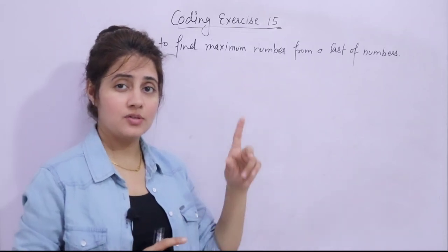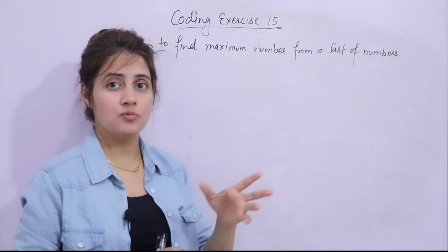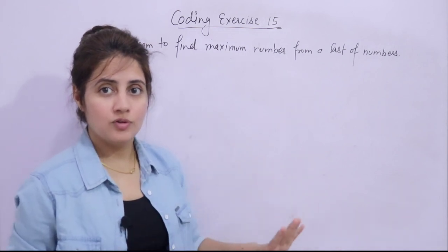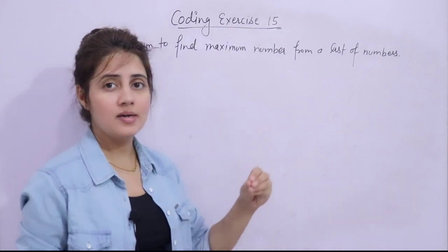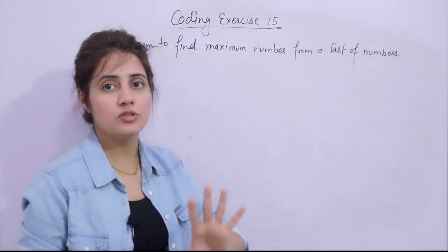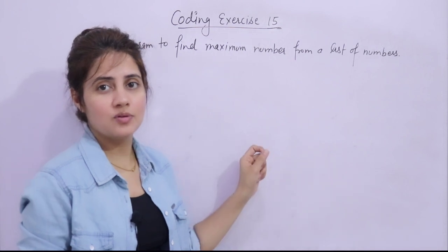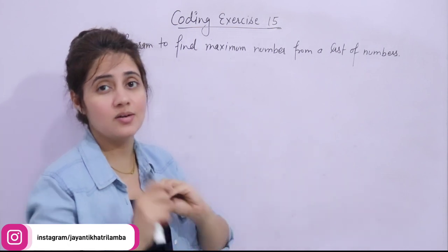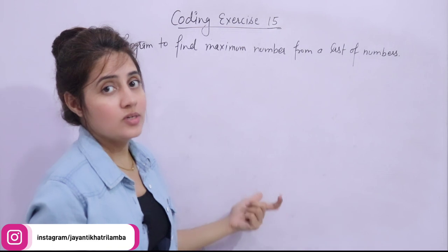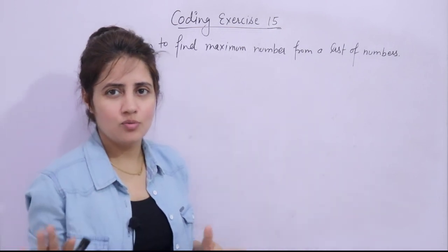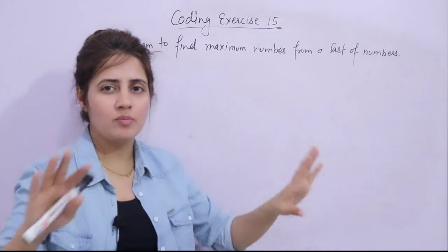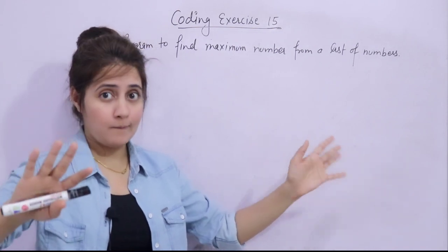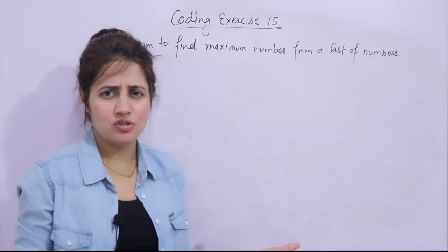In this series on learning Python programming, we discussed one coding exercise in the last video - a program to find the average height from a list of heights. We'll be seeing one more exercise in this video. It's a similar type of exercise, so I recommend watching that video first. Without looking at the solution here, you can easily solve this problem. The task is to write a program to find the maximum number from a list of numbers.